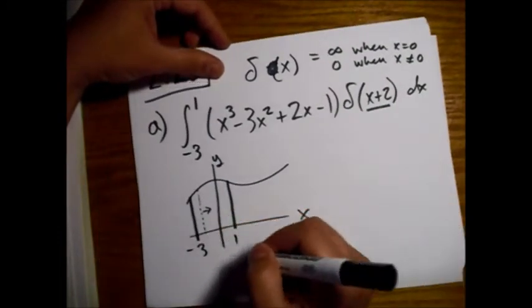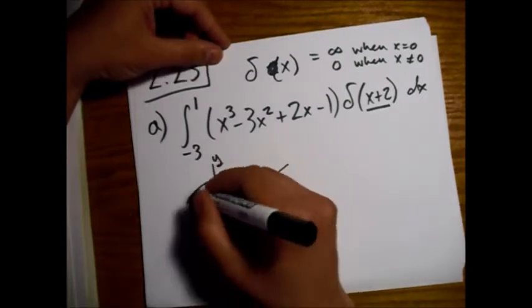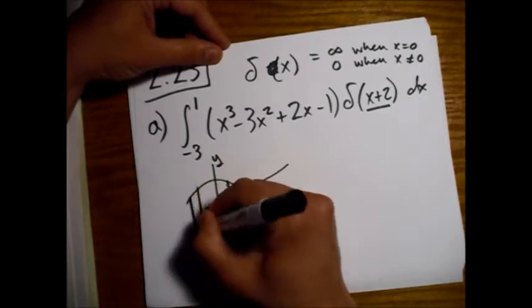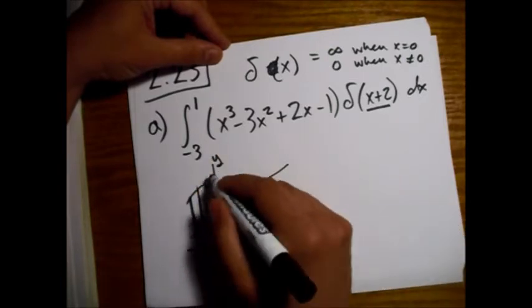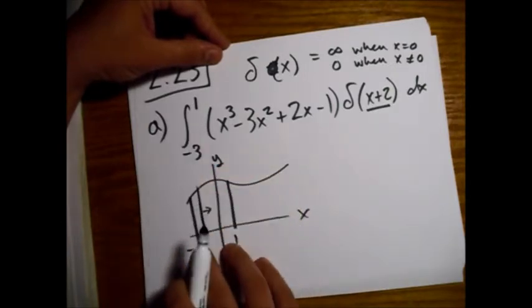So right where I drew the line, that's the only line that actually counts. Everything else, this whole function is multiplied by 0, and collapses down completely.